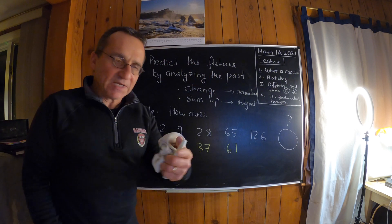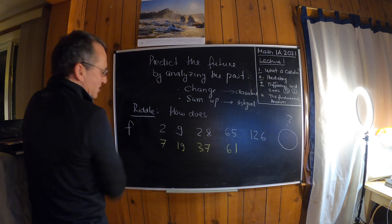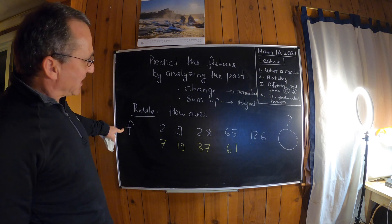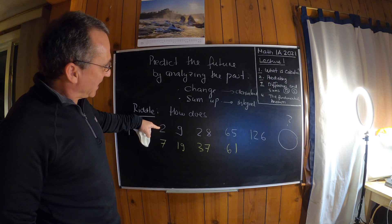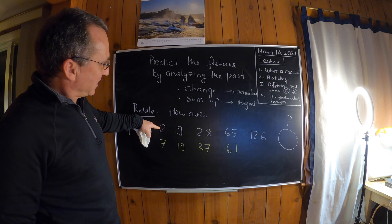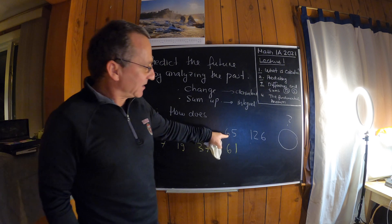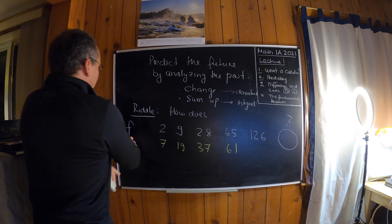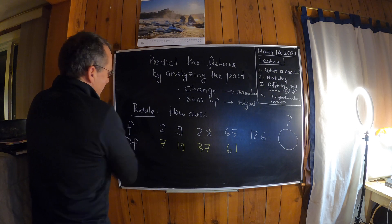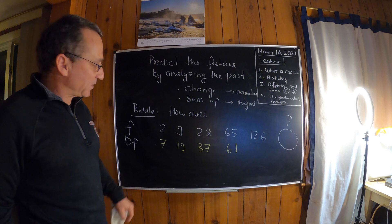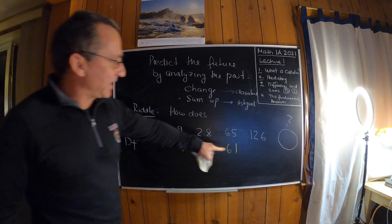We will call this a function — it takes some input and gives some output. So the first value we get is 1, the second value is 9, the third value is 28, and so on. That's what we call the derivative — I denote this df in this first lecture. That's the derivative, that's the rate of change.